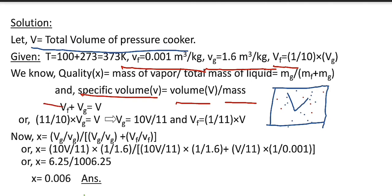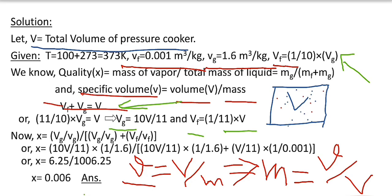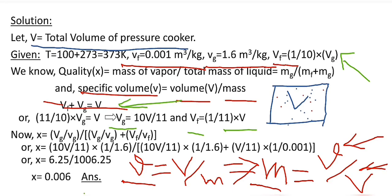Since this pressure cooker contains a mixture of saturated liquid and saturated vapor, the sum of the volume of saturated liquid and saturated vapor equals the total volume of the pressure cooker. Using the given relation between the volumes and substituting into the specific volume formula, we express mass in terms of specific volume and volume. Putting the values of mass of vapor and total mass into the dryness fraction formula, we get the quality of steam as 0.006.